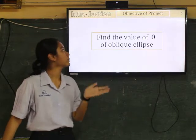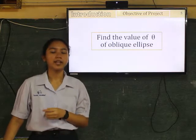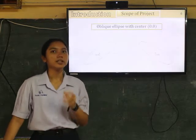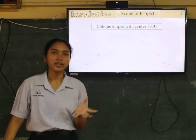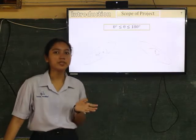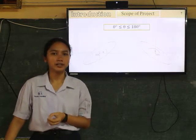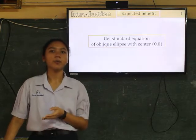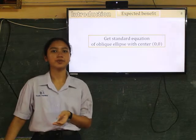The objective of this project is to find the value of theta of Oblique Ellipse. And I studied only the Oblique Ellipse with center zero zero, and the value of theta is from zero degree to 180 degrees. The expected benefit is to get the standard form of Oblique Ellipse with center zero zero.